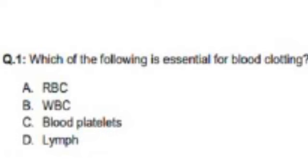Which of the following is essential for blood clotting? Option A RBC, Option B WBC, Option C blood platelets, Option D lympha. Correct answer is Option C blood platelets.